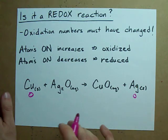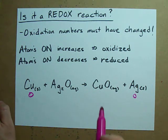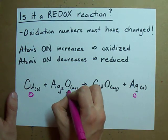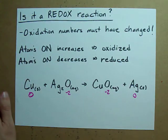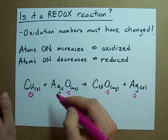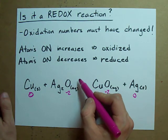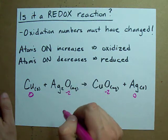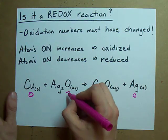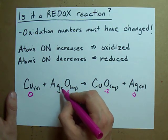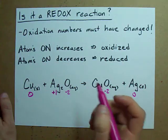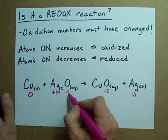Hydrogen is always plus one, but that's not an issue here. Oxygen is always minus two, so this oxygen is minus two and this oxygen is minus two. You have to assign the other oxidation numbers so that the total charge on the molecule — in this case zero — is the sum of the oxidation numbers of all the atoms inside. We've got a charge of minus two here and two silvers to counteract it, so each silver needs a charge of plus one. Two plus ones cancel out a minus two.